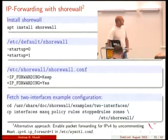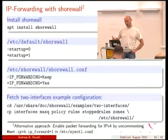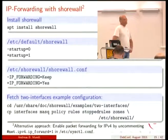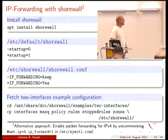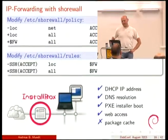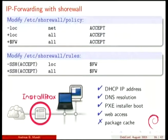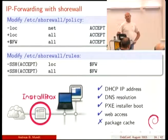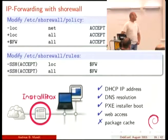How to do that? There are different ways. I did it with Shorewall because I used it in another setup — it's a firewall front end. We install Shorewall and switch on IP forwarding. We use the two-interface example configuration, just copy it in and modify it slightly. We want the local net to be able to access the install box, and we want to be able to log in via SSH from everywhere, just to simplify maintenance. After that we have web access, but no package cache so far.